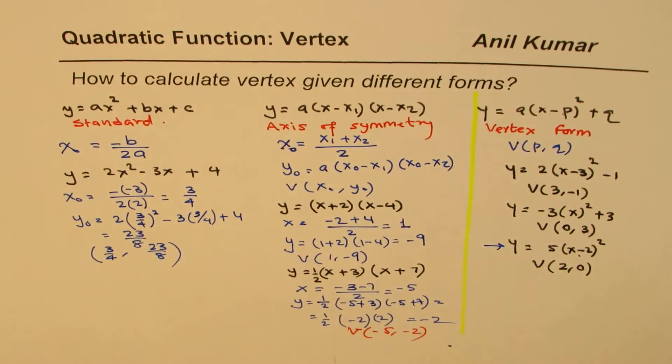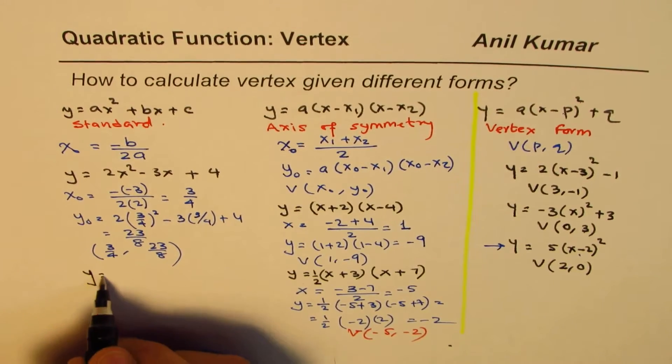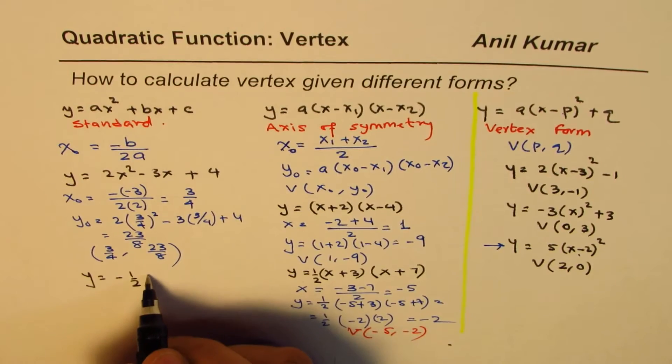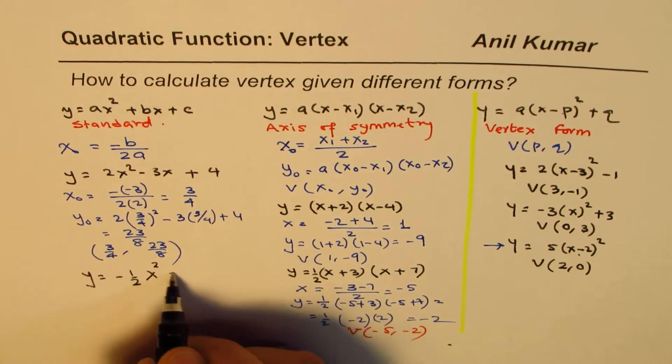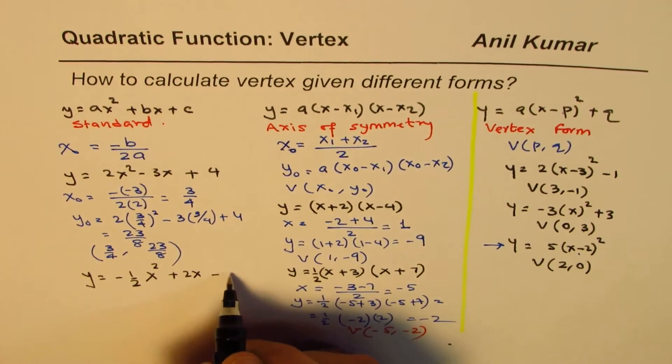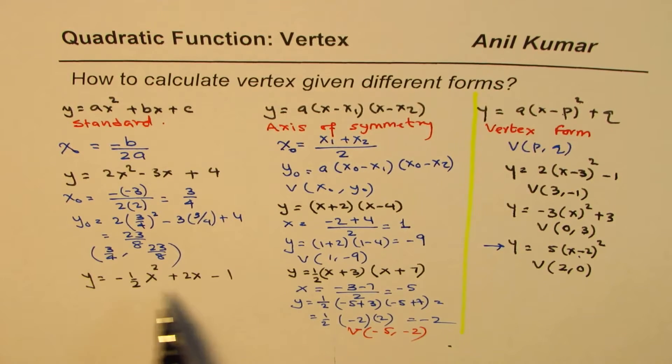So that is how you find the vertex when given in standard form. Well, for you a practice question: y equals to minus, let's say, half x² plus 2x minus 1. Simple. So try this out.